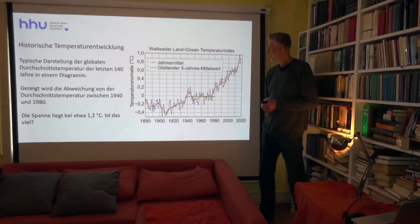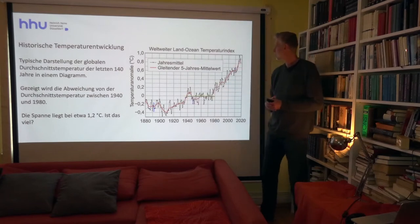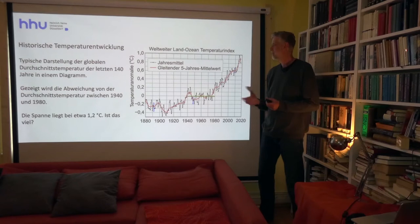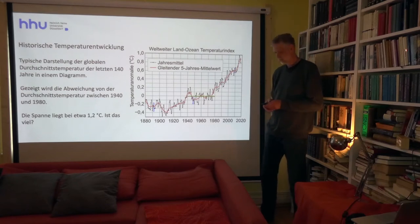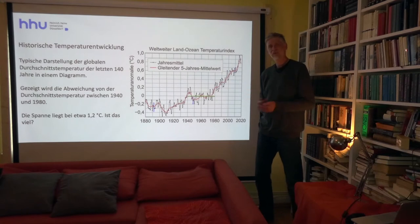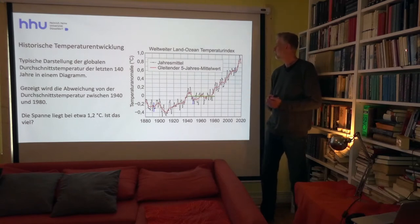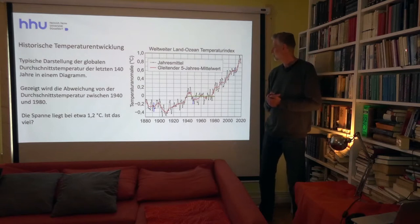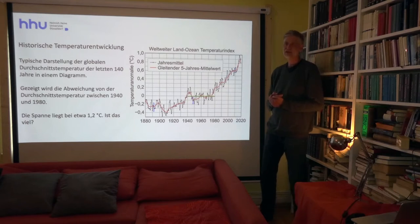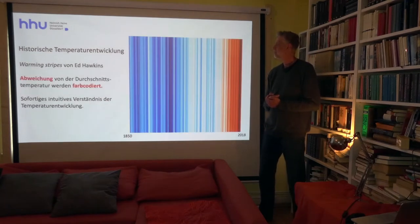Wir haben auch gesehen: Zwischen 1880 und heute haben wir eine Spanne von ungefähr 1,2 bis 1,4 Grad Celsius. Den Grund dafür wollen wir uns heute mal ein bisschen genauer anschauen und die Auswirkungen zum Teil beleuchten. Dieses Diagramm ist zwar mit sehr vielen Details versehen, aber es gibt andere Darstellungen, die wesentlich anschaulicher sind.